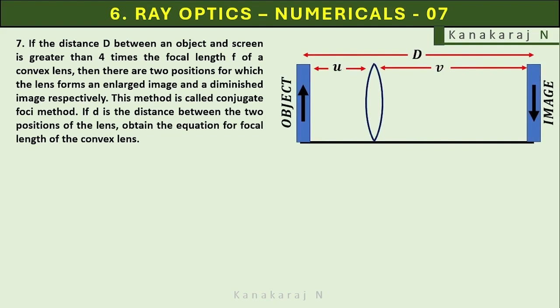This is the first position u of a convex lens that forms a diminished image. If we move this convex lens little away from the object, we get another image that is an enlarged image.